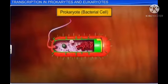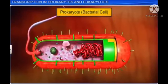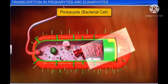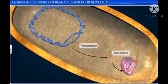Now let's learn how transcription takes place in prokaryotes such as bacteria. The prokaryotic cell does not have separations in terms of cytoplasm and nucleus. Therefore, both transcription and translation processes involved in protein synthesis can take place inside the prokaryotic cell at the same time.